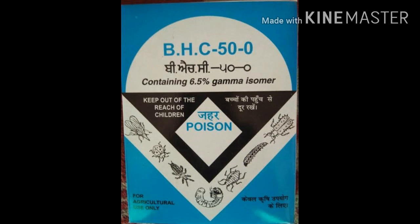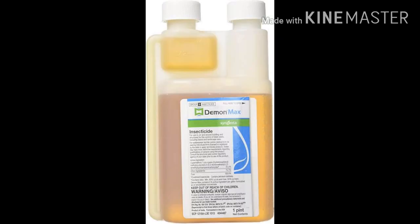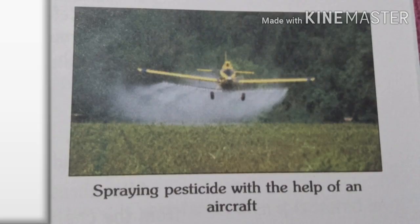Common pesticides include BHC, malathion, dimacron, and polytheon. These insecticides can be used to protect our crops. When insects spread over a very wide area, the pesticide can be sprayed with the help of an aircraft.